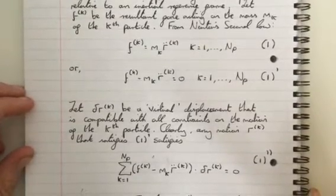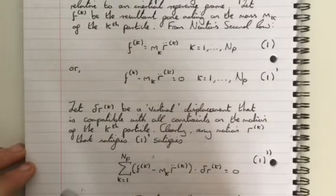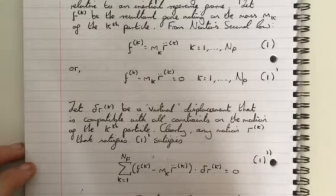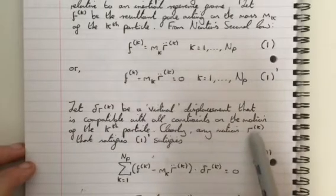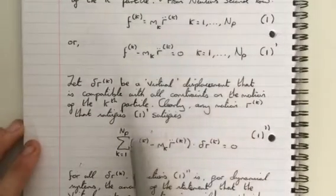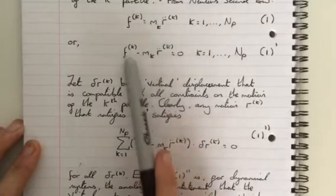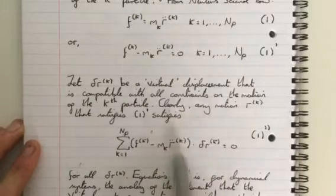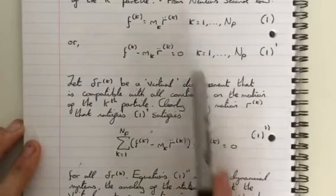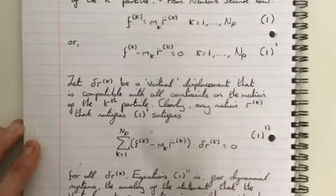So we're going to let delta Rk be a virtual displacement that is compatible with all constraints on the motion of the kth particle. Clearly, any motion Rk that satisfies the constraints satisfies this for all delta Rk. So what we get is the sum as k equals 1 to mp of Fk minus mk R double dot k, and we take the dot product with delta Rk. We can see it's going to also be 0 because this is simply 0 and it's compatible.